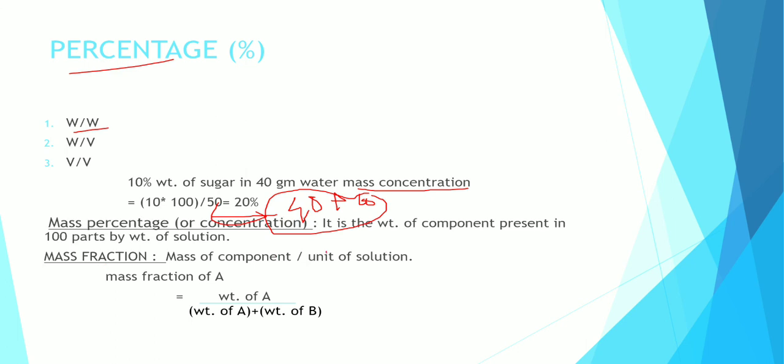Mass percentage of concentration is the weight of component present in 100 parts by weight of solution. Mass fraction: mass of component divided by unit of solution. Mass fraction of A equals weight of A divided by weight of A plus weight of B.